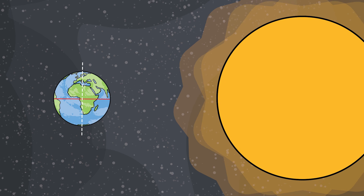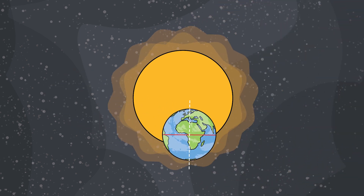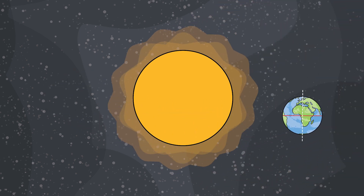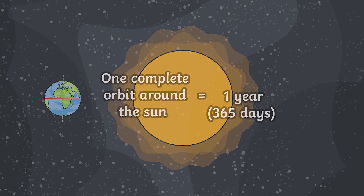The Earth also moves around, or orbits, the sun. One single orbit we call a year.